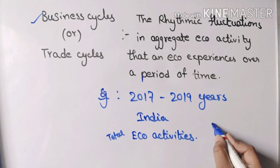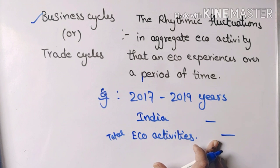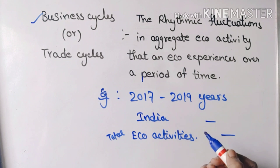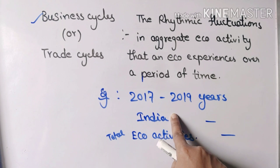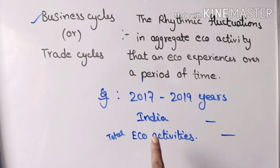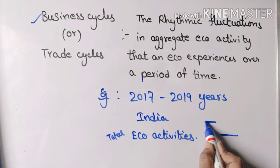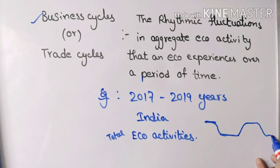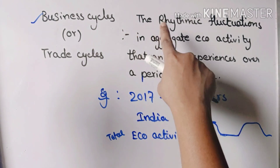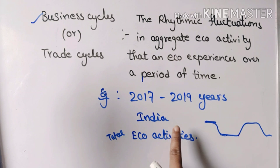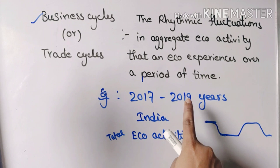Rhythm means ups and downs. So in 2017 and 2019, the global economy had sufficient economic activity with ups and downs. To repeat the definition: business cycles, also called trade cycles, are the rhythmic fluctuations in aggregate economic activities that an economy experiences over a period of time.